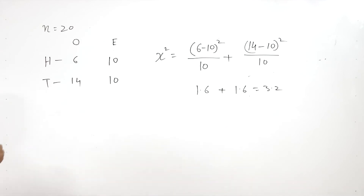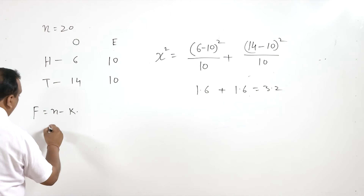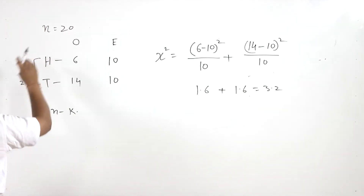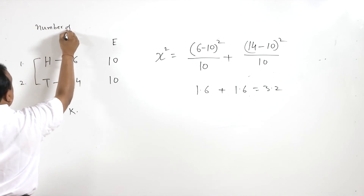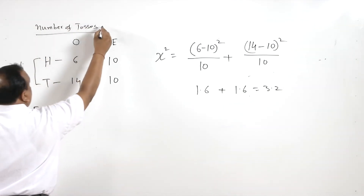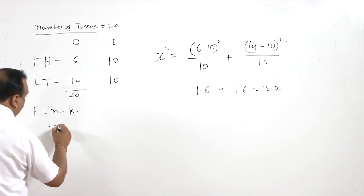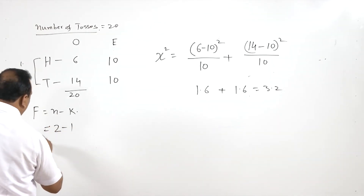For the degree of freedom: n equals 2 (either heads or tails), and the restriction is 1 because the two outcomes are not independent of each other. So f = 2 − 1 = 1.